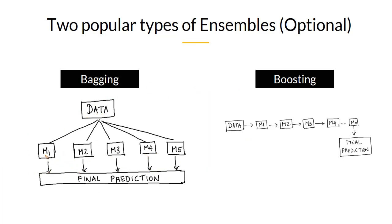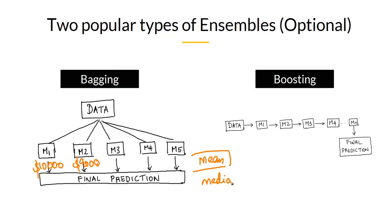Likewise, bagging can also be used for regression. For example, when predicting the housing price of a given house, each model gives one number — say ten thousand dollars, nine thousand dollars, and so on. The final prediction would typically be the mean or the median of all these predictions. That is how bagging works.